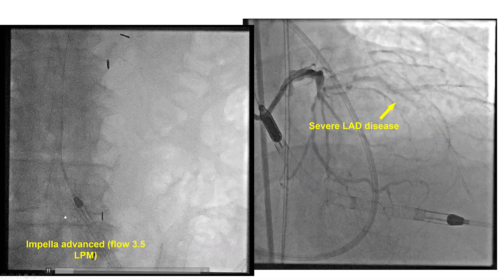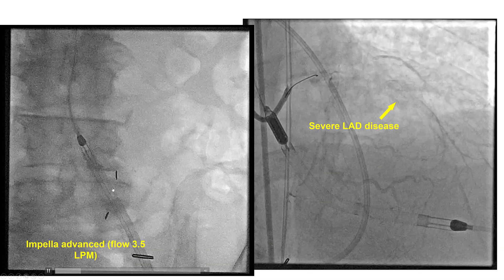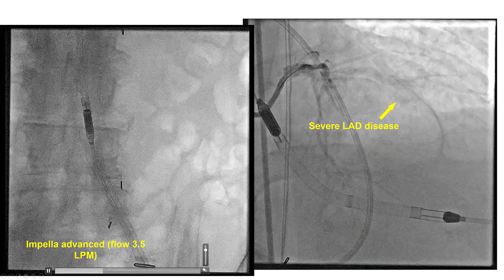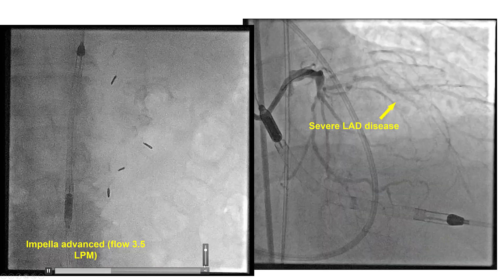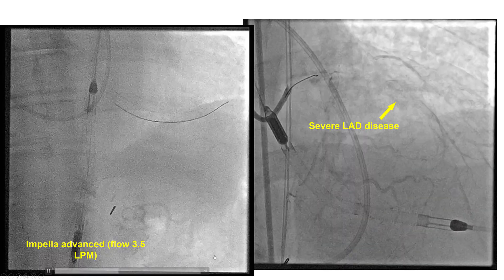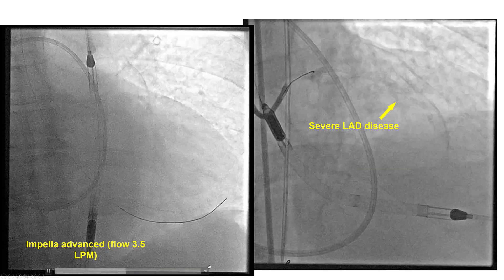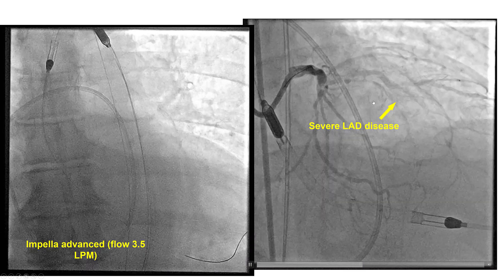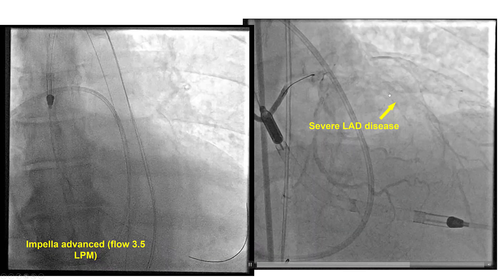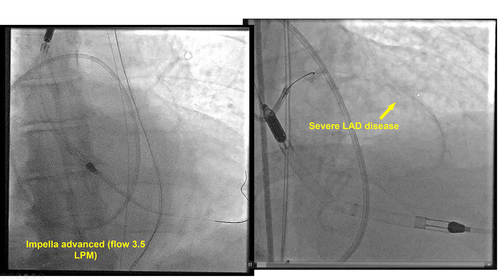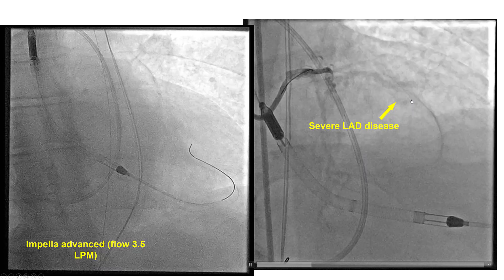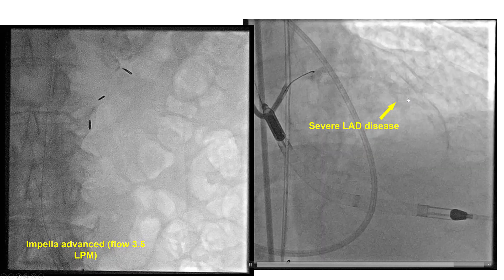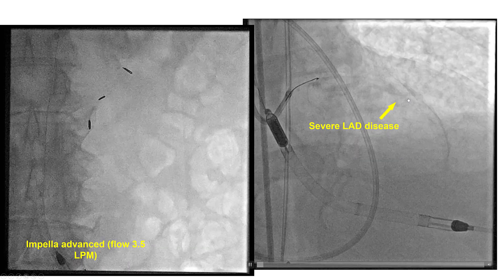The Impella was successfully inserted into the left ventricle, and support was initiated, providing flows of 3.5 liters per minute. Diagnostic angiography shows the same finding of significant disease in the proximal and middle LAD with the CTO of the middle LAD.